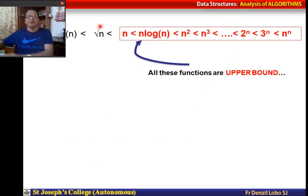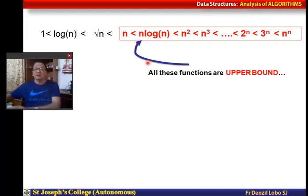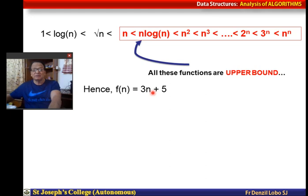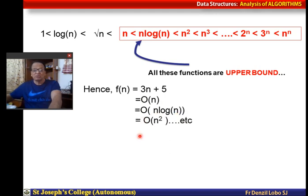Looking at the series: for f(n) = 3n + 1, it is Big O of n, also Big O of n log n, also Big O of n squared, and so on — but not Big O of log n, because log n is a lower bound. All the larger functions give upper bounds. However, we do not represent with all of them — we select the equation closest to f(n), which in this case is Big O of n.